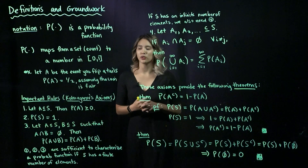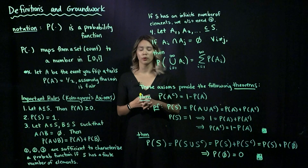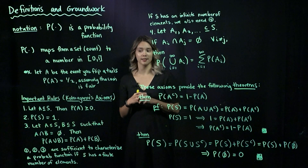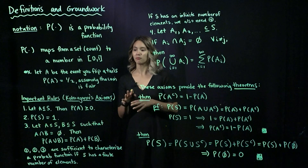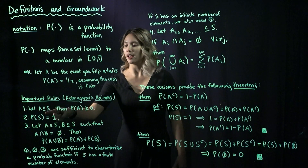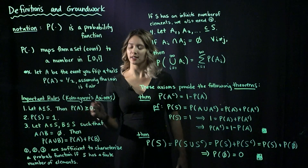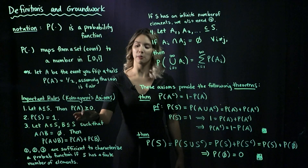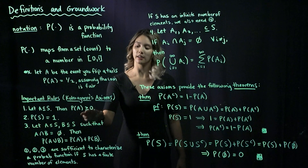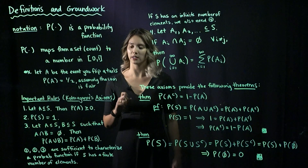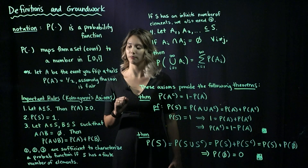Let's get into some important rules — these are axioms, Kolmogorov's axioms. The first one: let A be an event in S; then the probability of A is greater than or equal to 0. That's our first axiom.